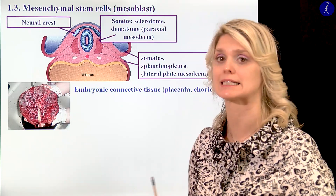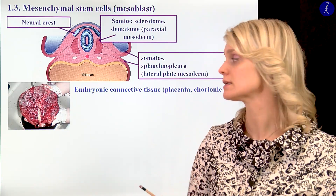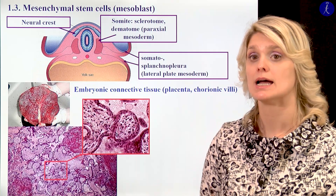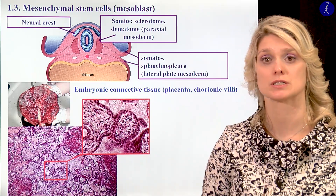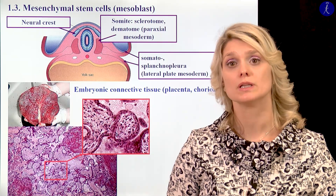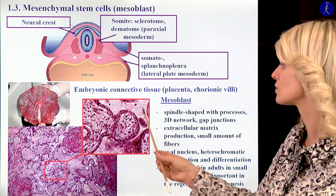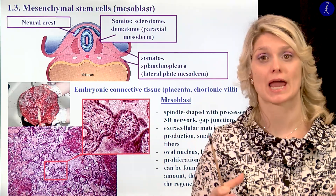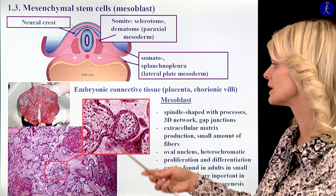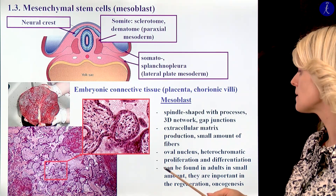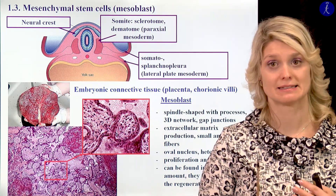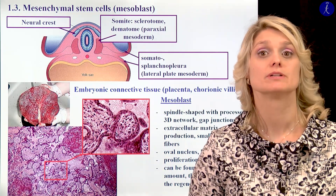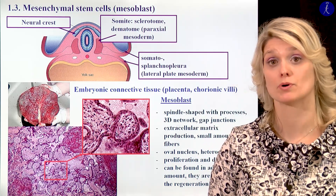Now I would like to show you one example of the embryonic connective tissue, which we can show very well within the slide of the placenta. In the placenta slide, you can see the cross-sections of the chorionic villi, and within the chorionic villi, we can see this special embryonic connective tissue with the mesoblast cells, which are spindle-shaped cells. We have connections between them; they produce a lot of fibers and ground substance, and they are able to proliferate and differentiate. They have a very important function during embryogenesis, but we can find them also in adulthood — they are important in the regeneration. Unfortunately, different tumors can also develop from these undifferentiated stem cells.